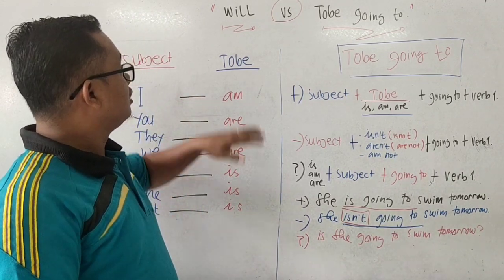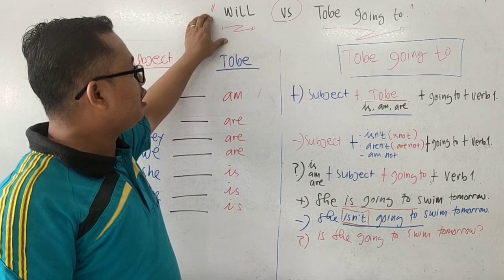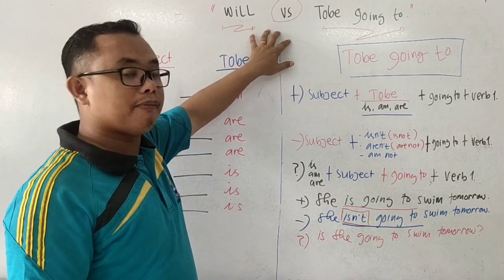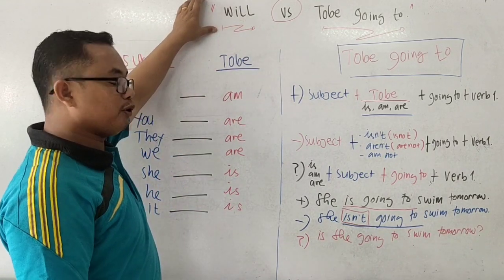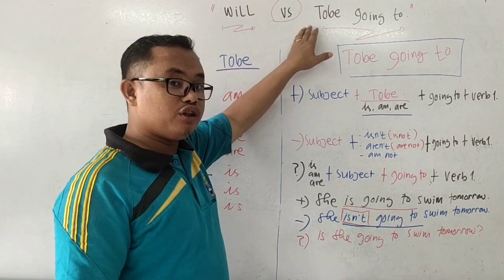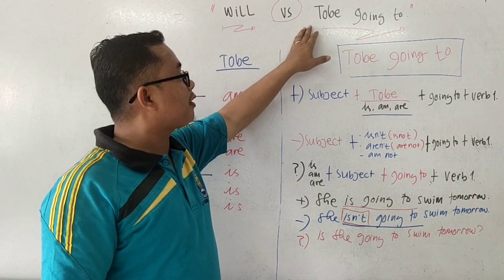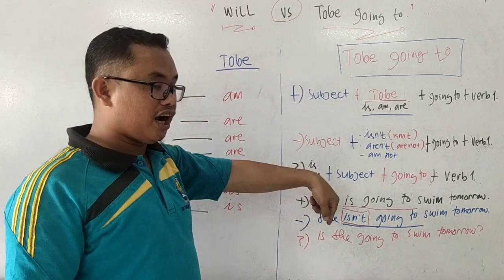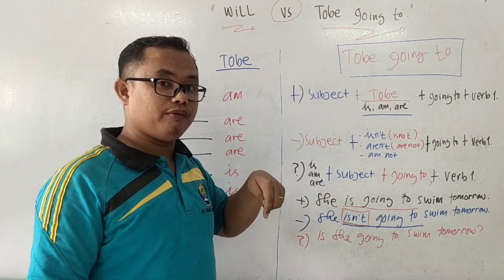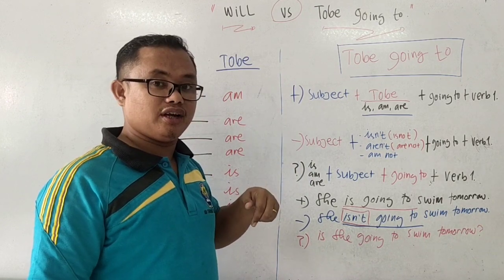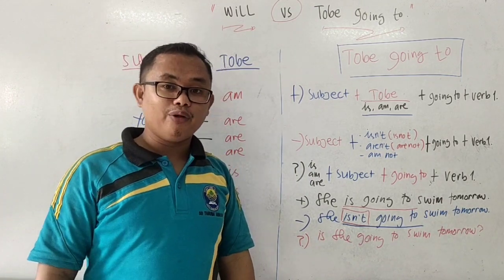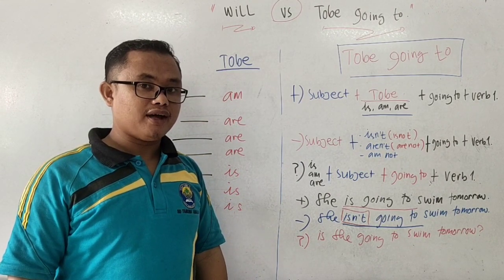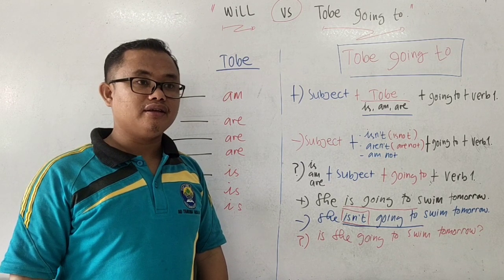Alright, that is the difference between 'will' and 'to be going to.' They have the same meaning but different usage. For 'to be going to,' don't forget to make your own examples in the comment section. That's it for today. Mr. Jimmy hopes you are doing your best in your studies. See you!